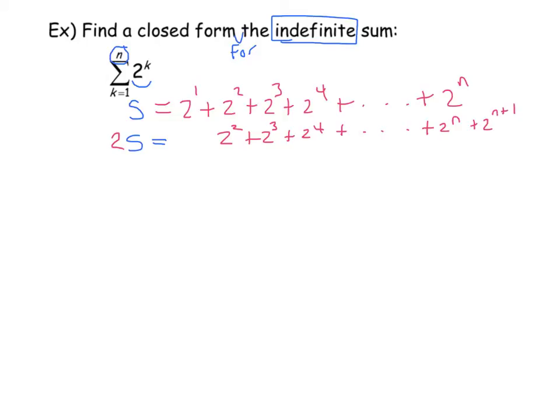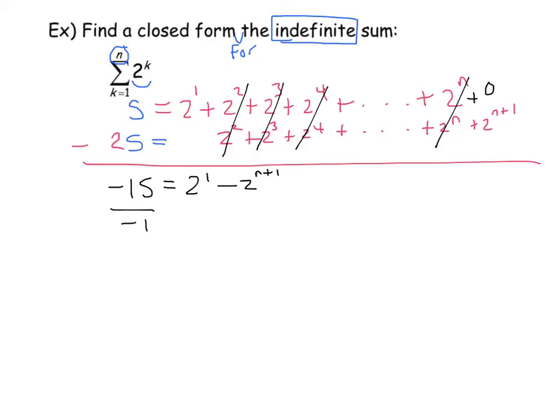Doing this subtraction now, I get 1S minus 2S is negative 1S, and that equals 2 to the 1 minus, so everything else subtracts to 0, and I have 0 minus 2 to the n plus 1, which is a minus 2 to the n plus 1.